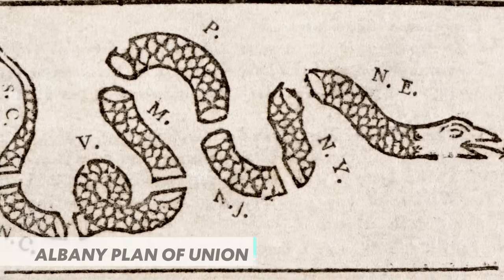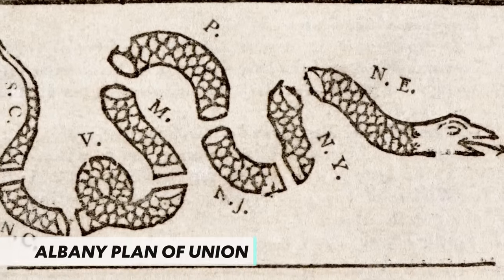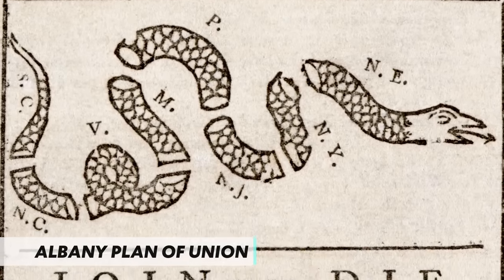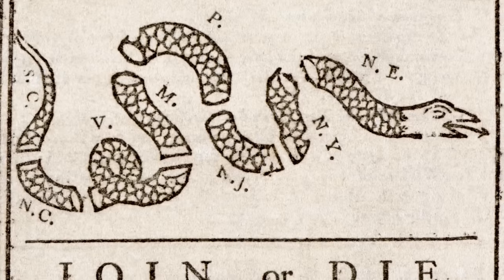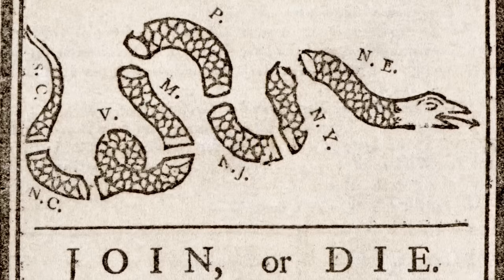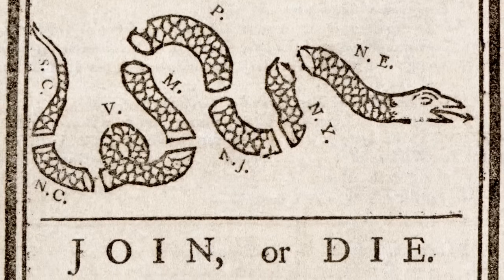It was at the Albany Congress that Benjamin Franklin took the opportunity to introduce his Albany Plan of Union. Under this plan, the colonies would establish a council of representatives to decide on matters of frontier defense, trade, and westward expansion. This plan was ultimately rejected, not least because the taxation it required stunk in the nostrils of the delegates. But the reason why it was important is that it laid the foundation for the future Revolutionary Congress.